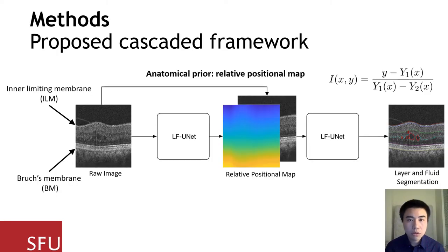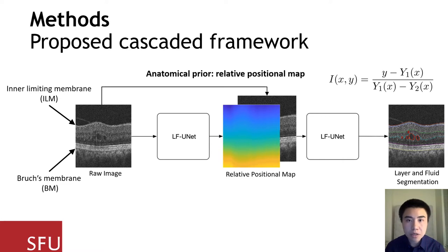In terms of methods, our approach consists of two cascaded networks. The first round segments the top and bottom boundaries of the retina, and then a pixel-wise positional map related to the initial segmented retinal boundaries was computed and used as an additional channel to the second round to segment the full five retinal layers and the retinal fluid.